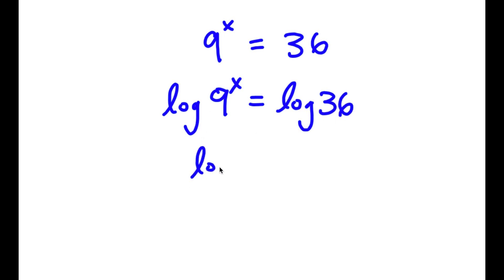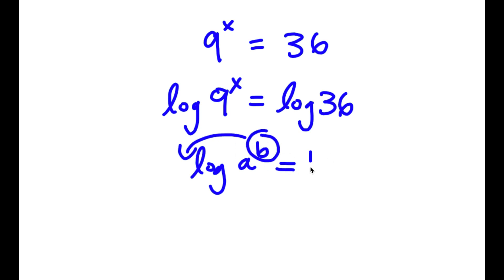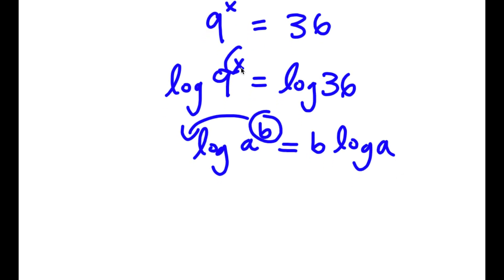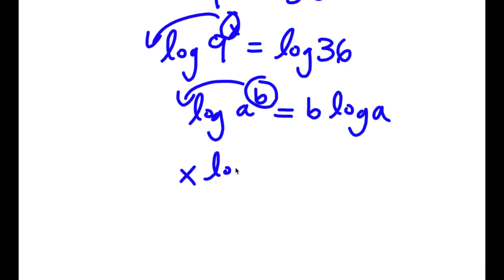Now, if I have something in the form log a to the power of b, I can move this exponent b to the front, so it equals b times log a. So in this case, I have log 9 to the power of x, and I can move x to the front. So now I have x times log 9 is equal to log 36.